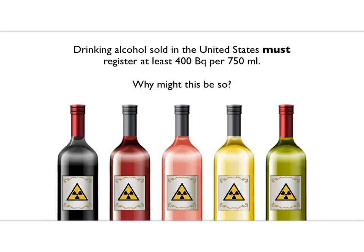Here's a really interesting thing that somebody in the class told me about. When you buy drinking alcohol in the United States — I've illustrated this with some bottles of wine here — they test it to see if it's radioactive, and it must register at least 400 becquerels per 750 milliliters of alcohol. Why would you require alcohol to be radioactive? I want you to think about the source of the alcohol — where does it come from, and where can it not come from?